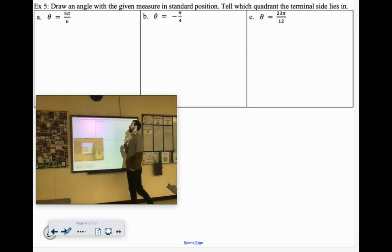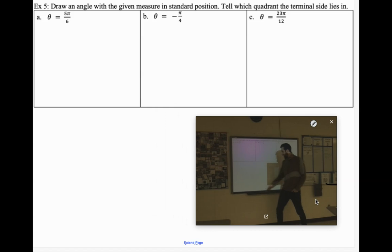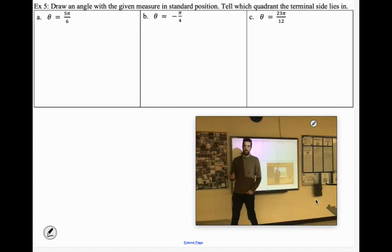So we're going to draw an angle with the given measure in standard position and tell which quadrant the terminal side lies in. I'm going to tell you guys right now how to convert radians into degrees. Remember, like 180 degrees was one π.